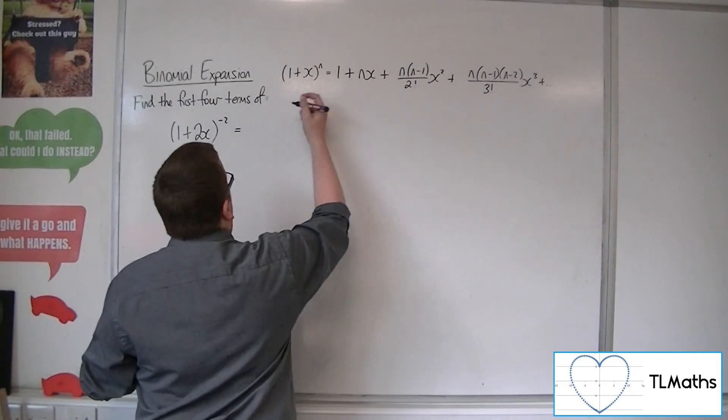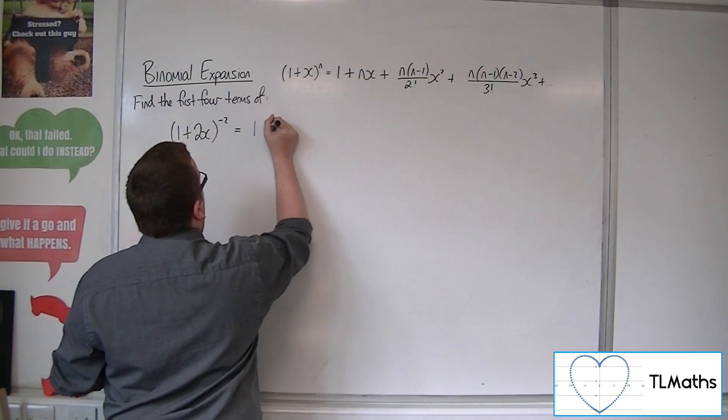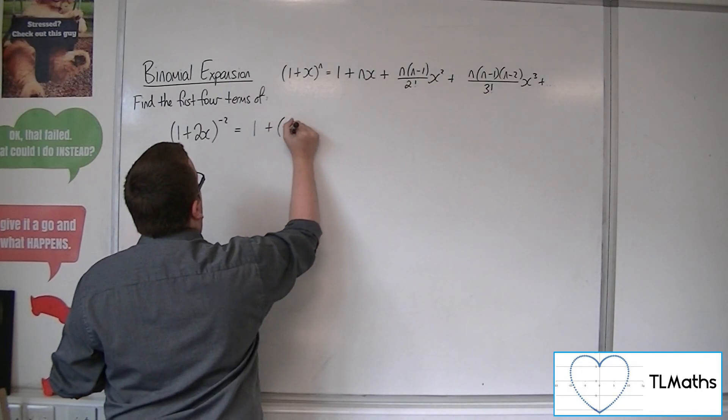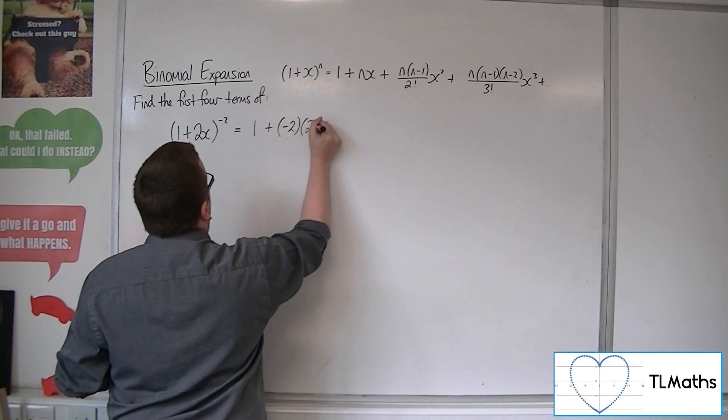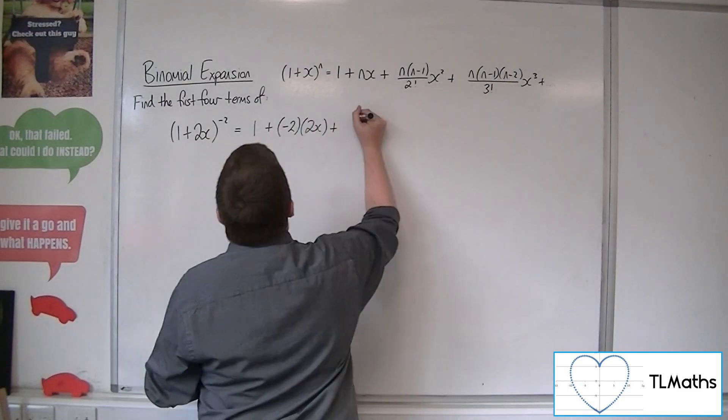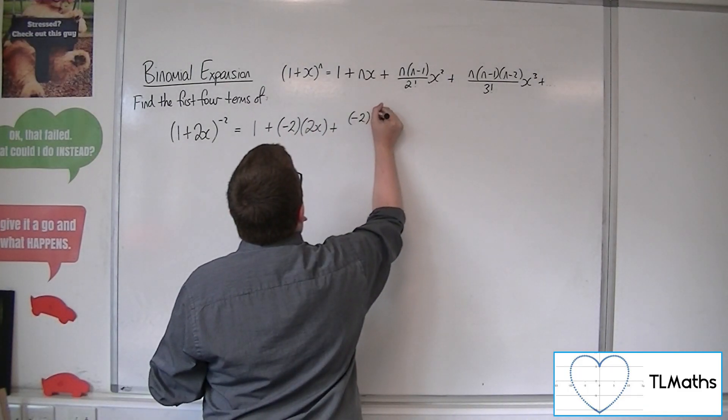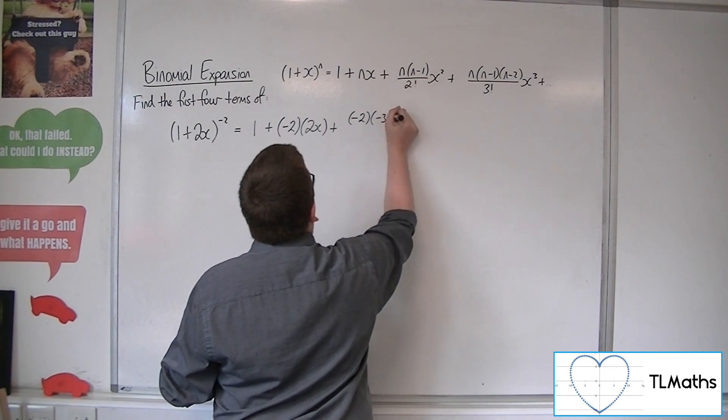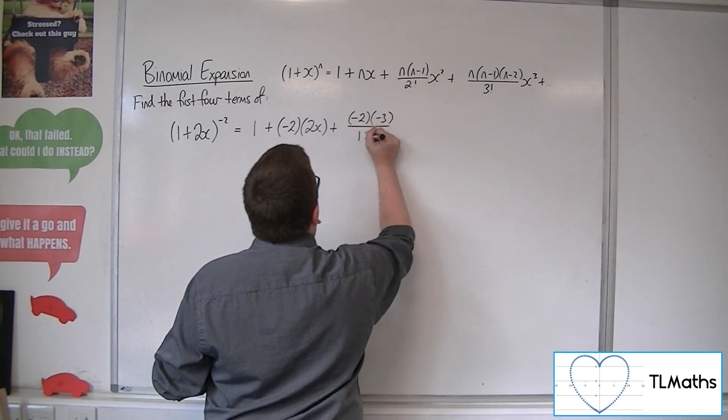So we start off with 1 plus n, which is minus 2, times x, which is 2x, plus minus 2, times by minus 3, all over 1 times 2.